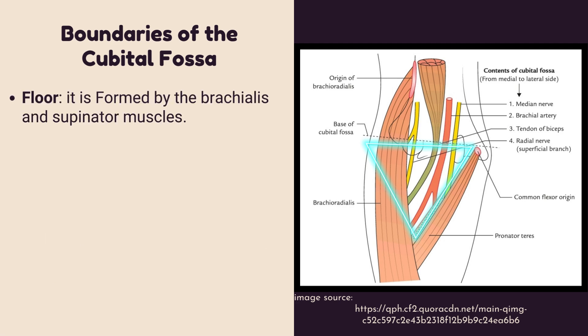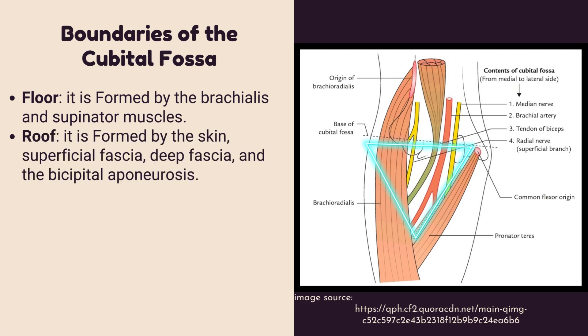The floor of the cubital fossa is formed by the brachialis and supinator muscles. The roof is formed by the skin, superficial fascia, deep fascia, and the bicipital aponeurosis.